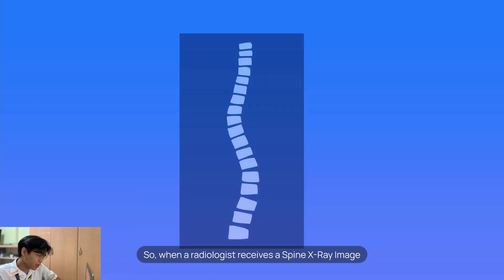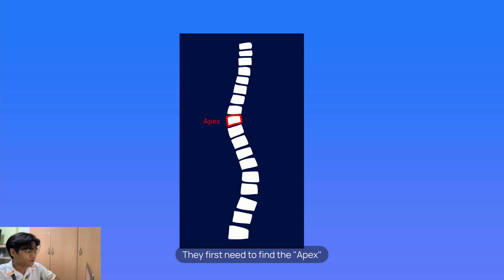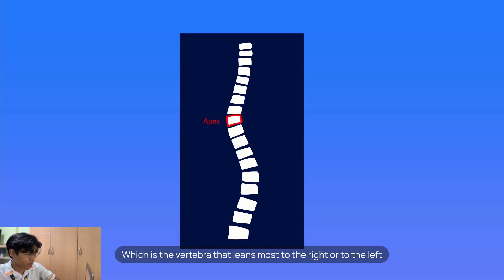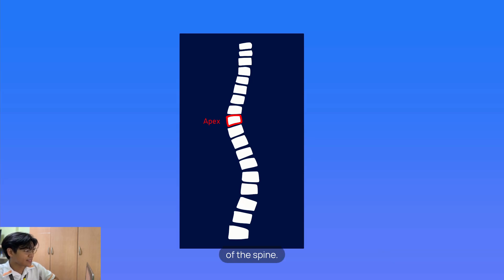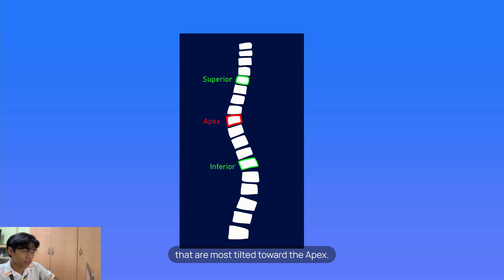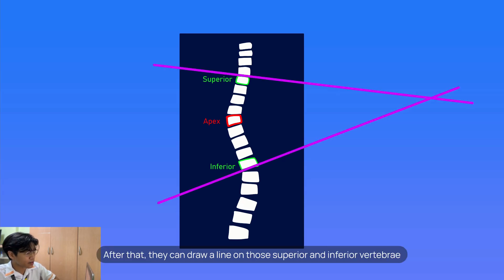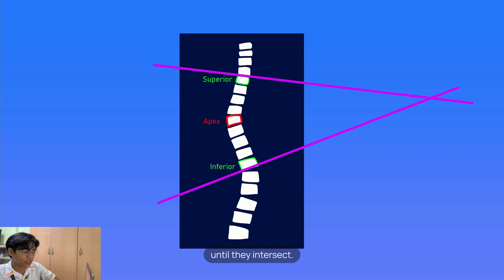When a radiologist receives a spine x-ray image from a patient to assess, they first need to find the apex, which is the vertebrae that tilts most to the right or to the left of the spine. Second, they need to find the superior and inferior vertebrae that are most tilted toward the apex. After that, they can draw a line on those superior and inferior vertebrae until they intersect.